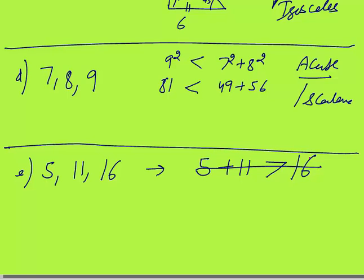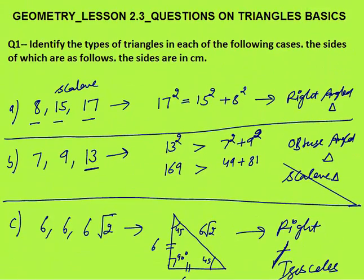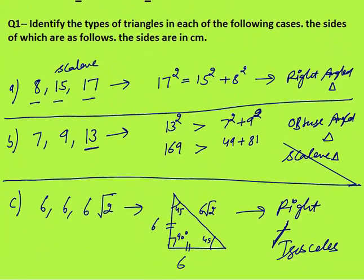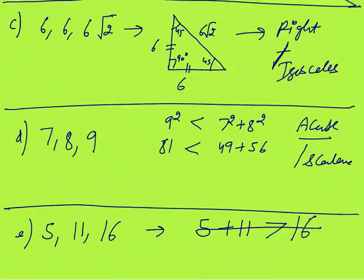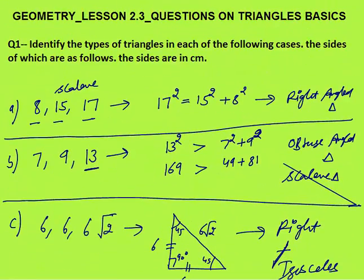So I have discussed five cases with you. You need to understand this and try to solve questions in the fastest manner. Given three sides, you can always determine what kind of triangle they will make.